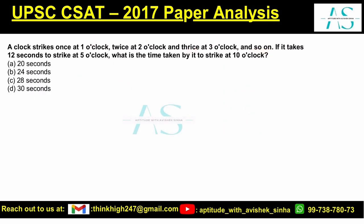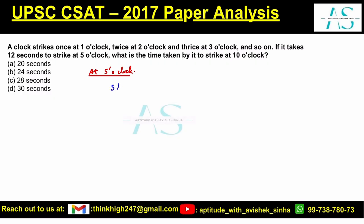Now, it takes 12 seconds to strike at 5 o'clock. If we talk about 5 o'clock, the clock would strike 5 times exactly at 5 o'clock. And for those 5 strikes, how much time does it take? The answer given in the question is 12 seconds — it takes 12 seconds to strike 5 times.